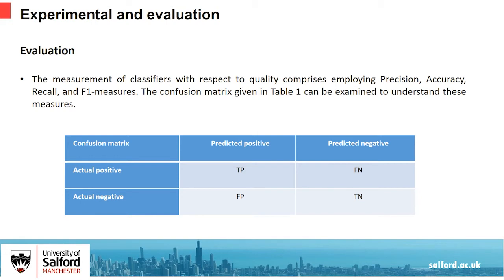The performance of every technique was evaluated with criteria of precision, accuracy, F-measure, and recall. The measurement of classifiers with respect to quality comprises employing precision, accuracy, recall, and F-measures. The confusion matrix given in Table 1 can be examined to understand these measures.